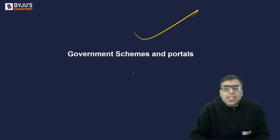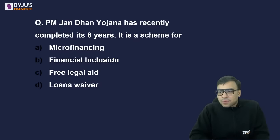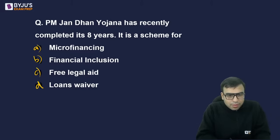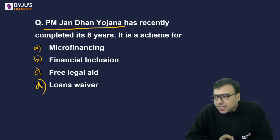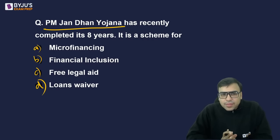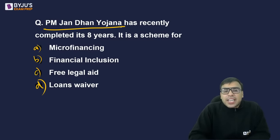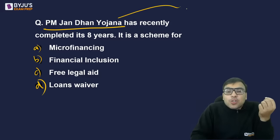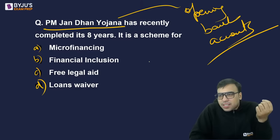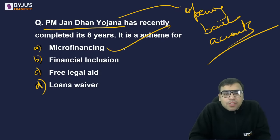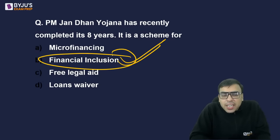Now let's discuss government schemes and portals. Question: Pradhan Mantri Jan Dhan Yojana has recently completed its 8th year. It is a scheme for: microfinancing, financial inclusion, free legal aid, or loan waiver? The right answer is B — financial inclusion, meaning opening bank accounts. Pradhan Mantri Jan Dhan Yojana creates zero-balance accounts. It was launched on 20th August 2014.